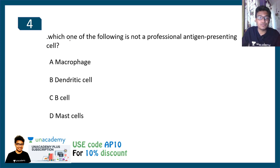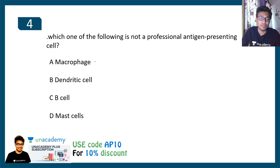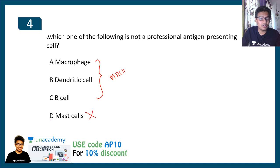The next question: which of the following is NOT a professional antigen presenting cell — macrophage, dendritic cell, B cell, or mast cell? All professional APCs express MHC class 2. Macrophage, dendritic cell, and B cell all have MHC class 2, so the correct answer is option D — mast cell.